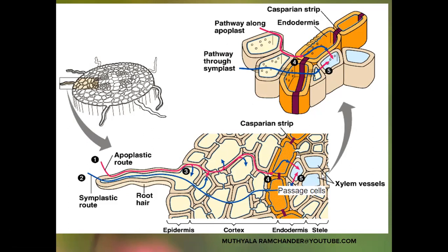The passage cells allow the water into the xylem vessels. Finally, the water reaches the xylem vessels by the apoplastic route.